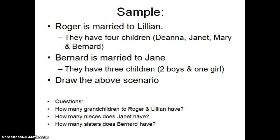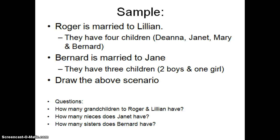Let's do a sample. Roger is married to Lillian. They have four children: Deanna, Janet, Mary, and Bernard. Bernard is married to Jane, and they have three children — two boys and one girl. What I'd like you to do is draw the above scenario, and if you need to go back to the previous slide, feel free to do that. Then see if you can answer these questions: How many grandchildren do Roger and Lillian have? How many nieces does Janet have? And how many sisters does Bernard have? Pause the program and draw the pedigree.